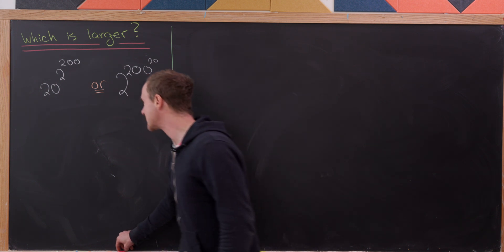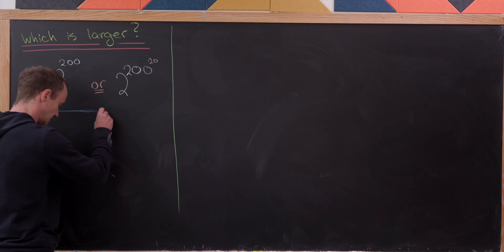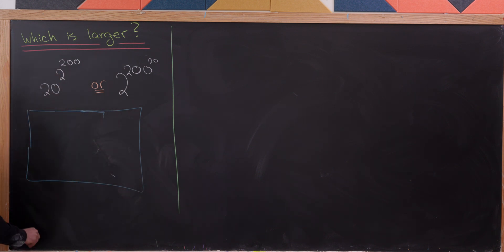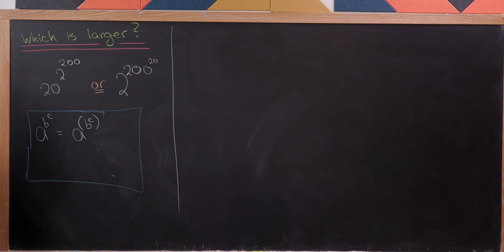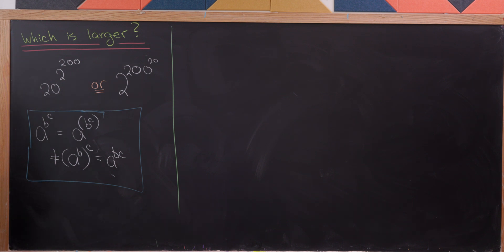And before we get started, I'd like to make the following observation about exponentiation. This deals with perhaps what I would call the non-associativity of exponentiation. So when we write something like a to the b to the c, what we really mean is we're raising a to the power b to the c. Notice that that is not the same thing as raising a to the b power to the c power, which itself is equal to a to the b times c.